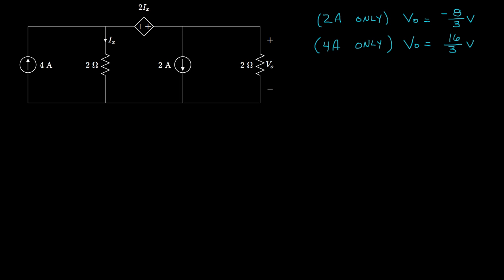Using superposition with both sources present, the total output voltage is the sum of the two individual contributions: −8/3 + 16/3 = 8/3 volts.